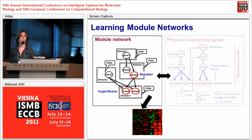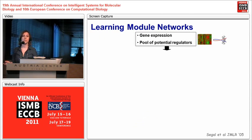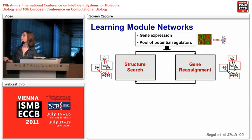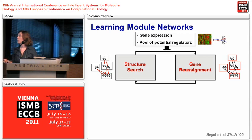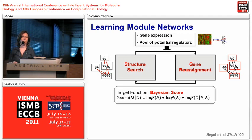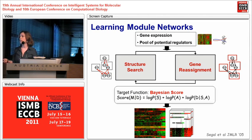We start with the module network. In the original paper, the learning procedure accepts gene expression and a pool of potential regulators as input, then uses an iterative procedure alternating between assigning genes into modules and finding regulators for each module — a structure search in the graph. They iterate between these two steps while optimizing the Bayesian score, derived from the posterior probability of the model. Upon convergence, the output is a list of modules, and for each module, a set of regulators and the conditional probability distribution CPD.